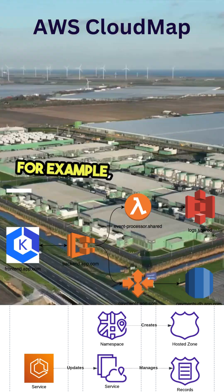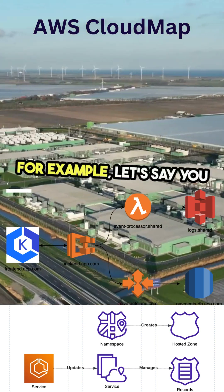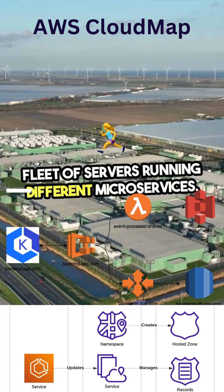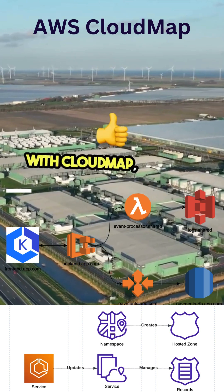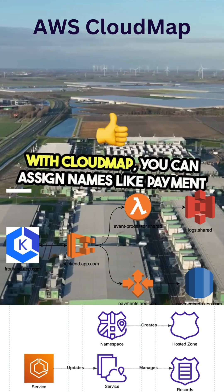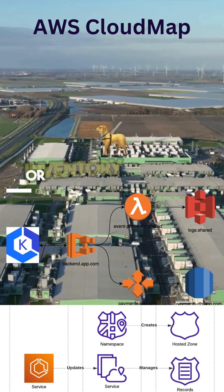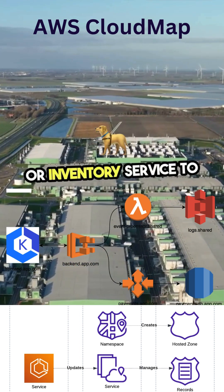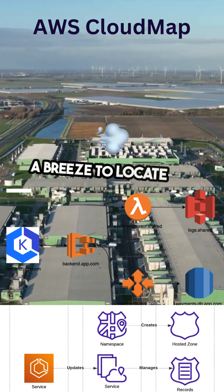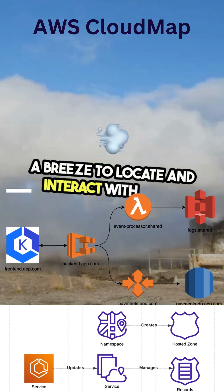For example, let's say you have a fleet of servers running different microservices. With CloudMap, you can assign names like Payment Service or Inventory Service to each of them, making it a breeze to locate and interact with them.